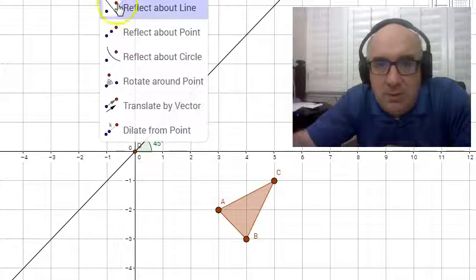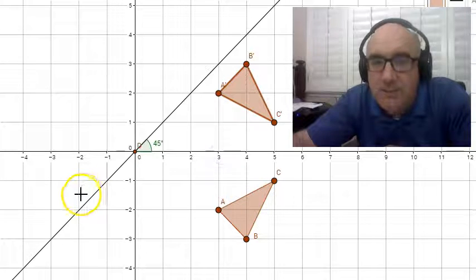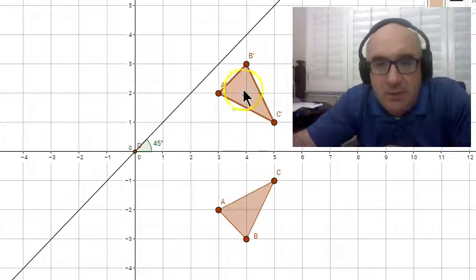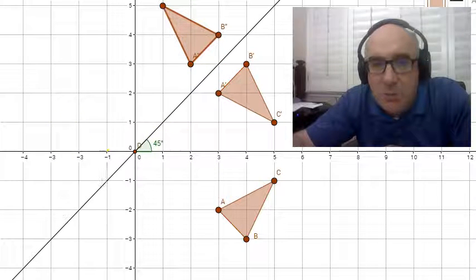So let's do a reflection. Let's take our triangle and reflect it over the x-axis. The orientation has been reversed. Let's take that triangle again and reflect it one more time.